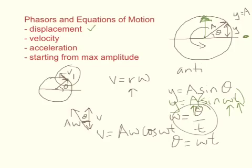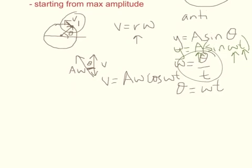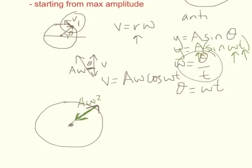And then the last one is the acceleration. When you're dealing with the acceleration, you've also got a circle, draw it a bit bigger this time. And the same position for our rotating displacement vector Y. Our acceleration is always towards the center, and it's constant. In this case, A omega squared. What we're interested in is the vertical component, back towards the equilibrium position.